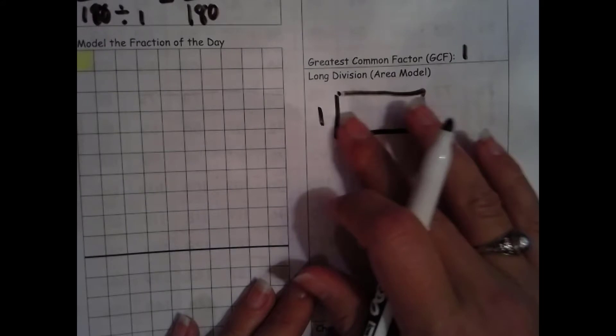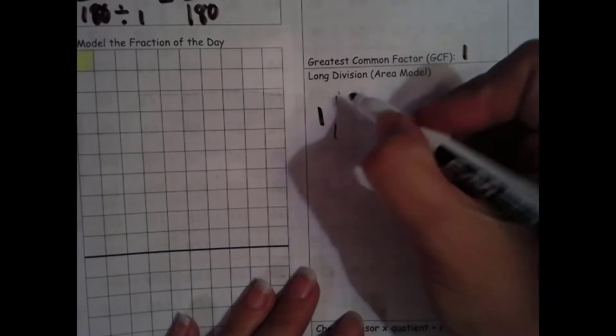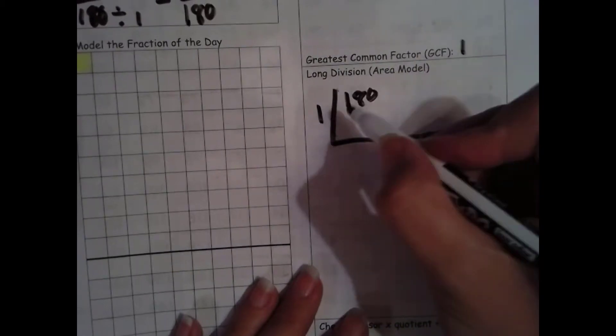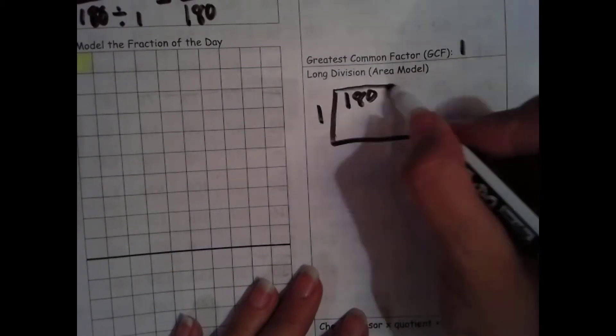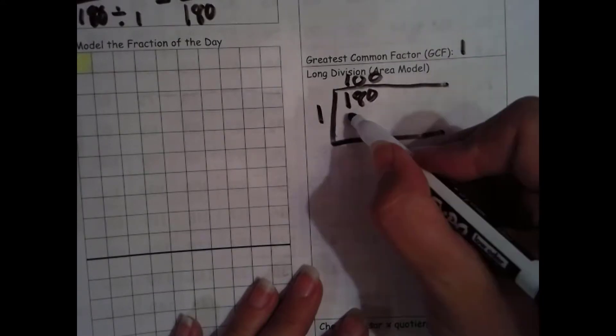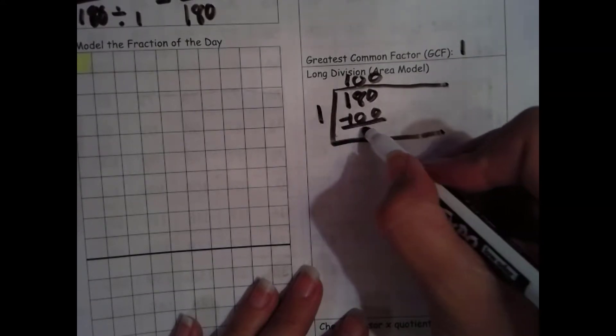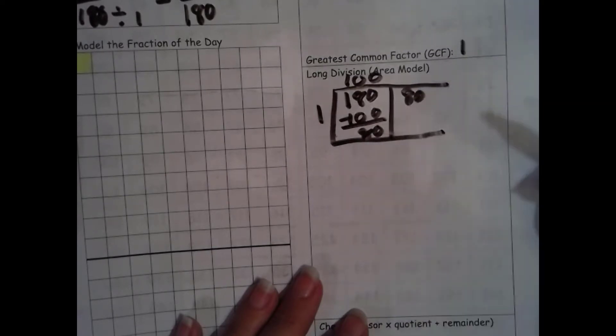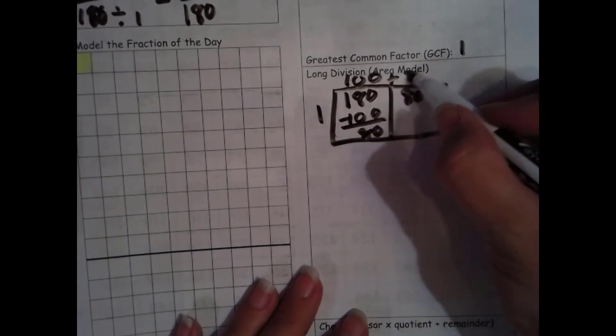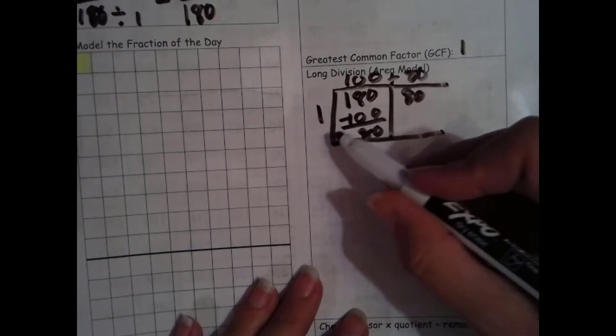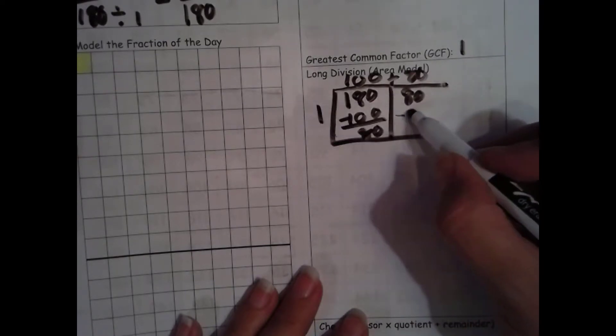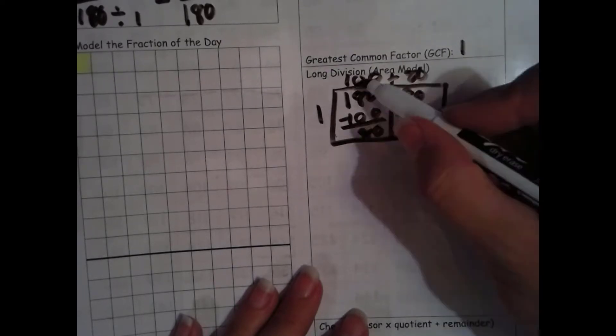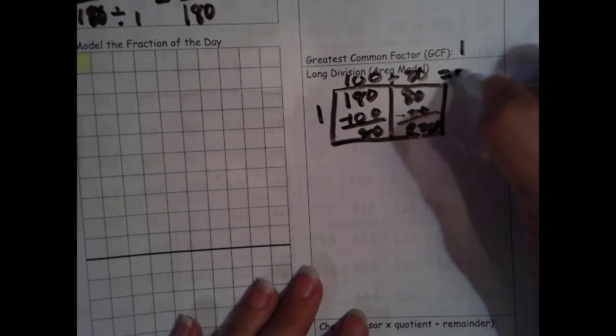So we're going to divide 180 by 1. Well, let's see. I could do 1 times 100, subtract that. That leaves 80. So that goes up here. And then I could do 80 times 1, which is 80. The number is the same. Zero is the game. Nothing left.